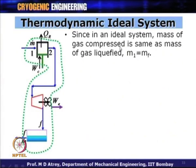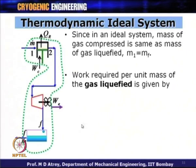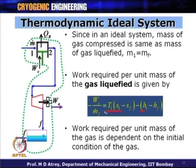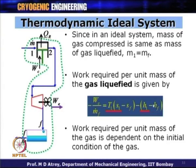Since in an ideal system the mass of gas compressed equals the mass liquefied, M_1 dot equals M_F dot. Work required per unit mass of gas liquefied: minus W_C / M_F dot equals T_1(S_1 − S_F) − (H_1 − H_F). The work required depends on the initial condition of the gas, since T_1, S_1, H_1 are known, and S_F and H_F at saturated liquid condition are determined at the same pressure.